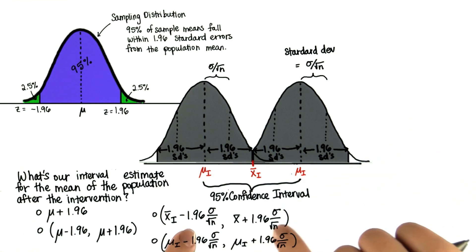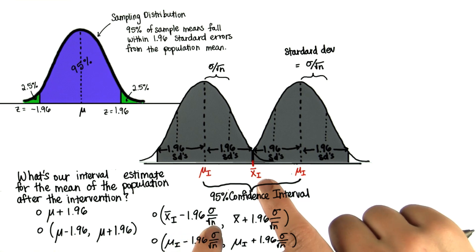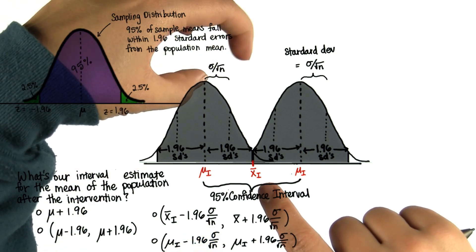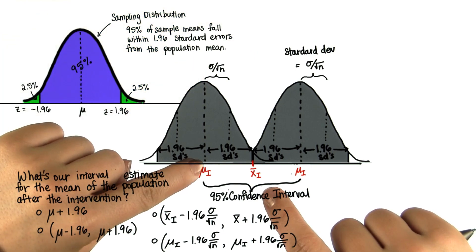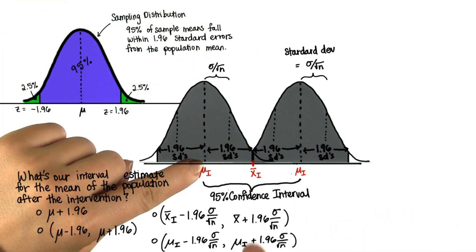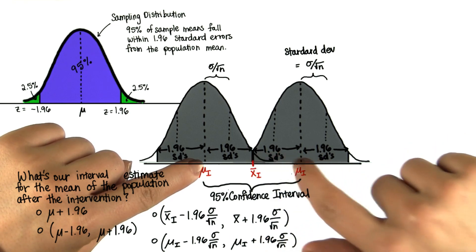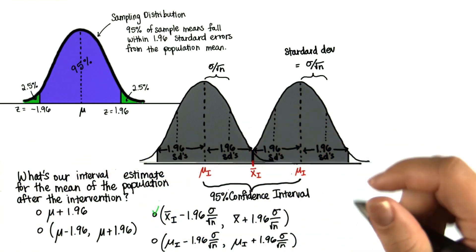This one looks more promising. We have our sample mean, and we subtract 1.96 standard deviations. And since the standard deviation is sigma divided by root n, that would be this value here. And then if we add 1.96 standard deviations, that would give this value here. And that is our confidence interval. So we found the answer.